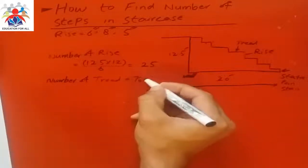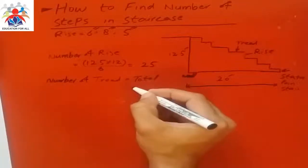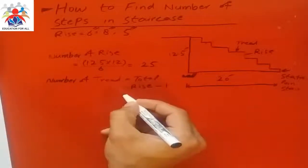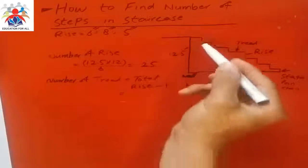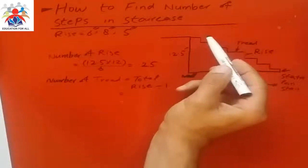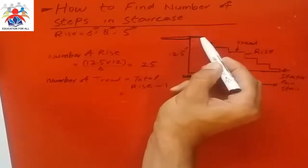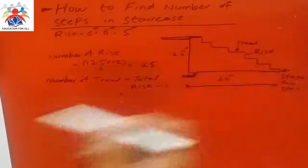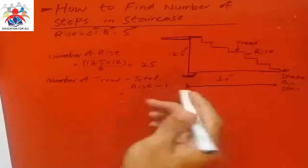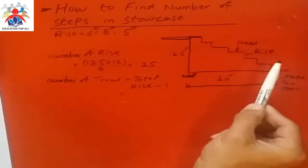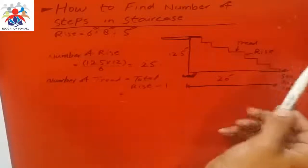Why do we do minus one? Because the last step goes into the floor slab. This is our roof, I would say, not floor. So this is the floor area. That's why we do one number minus, as you can see from here.